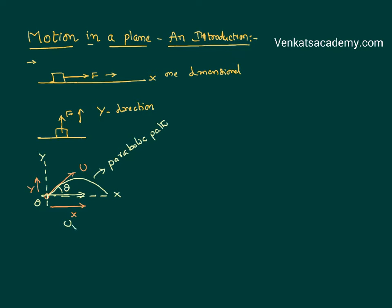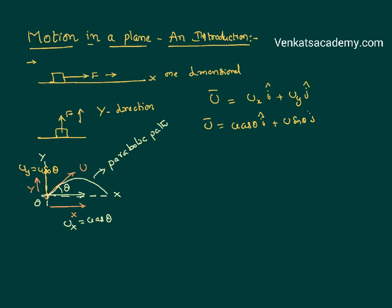I can resolve this into an x-component ux — because it is the adjacent component, it will become u cos θ. The other component is the y-component; it is the opposite component, uy, which is equal to u sin θ. The body gets displaced along x and y because it simultaneously has velocity along both axes. So the initial velocity vector u-bar equals ux along the i-cap (x-axis) plus uy along the j-cap (y-axis), which is u cos θ i-cap plus u sin θ j-cap.